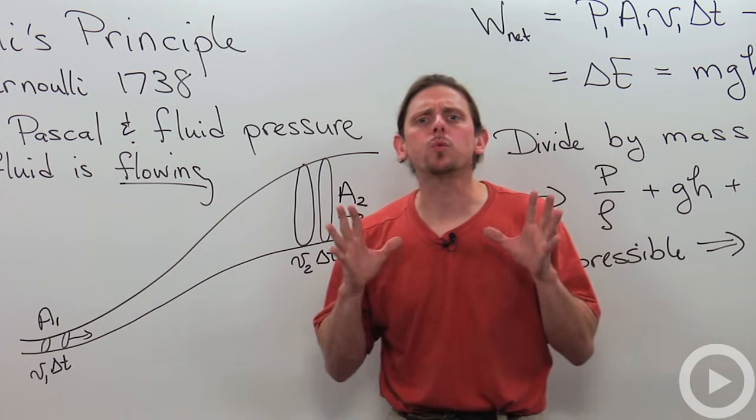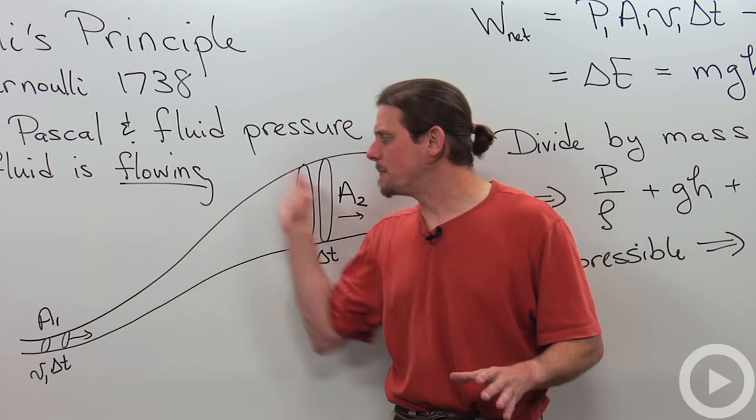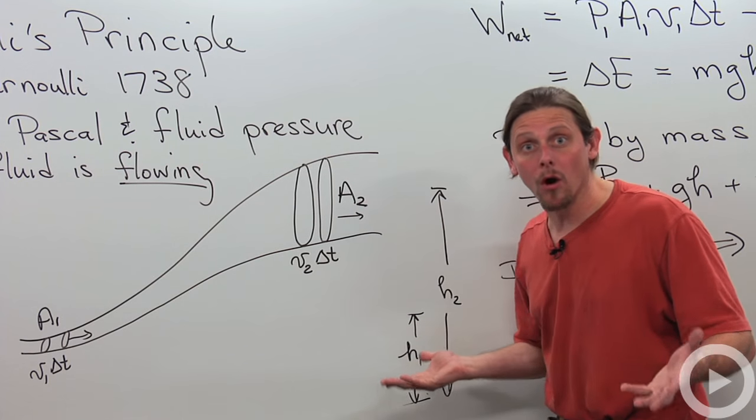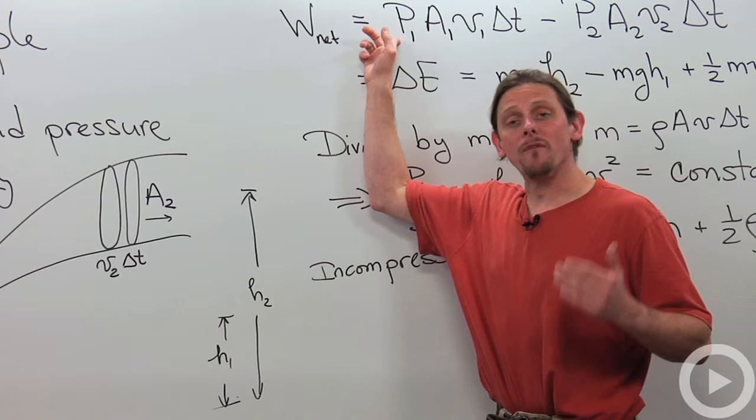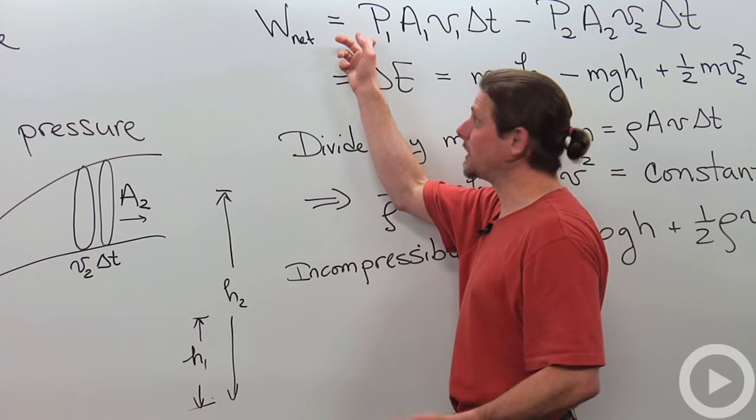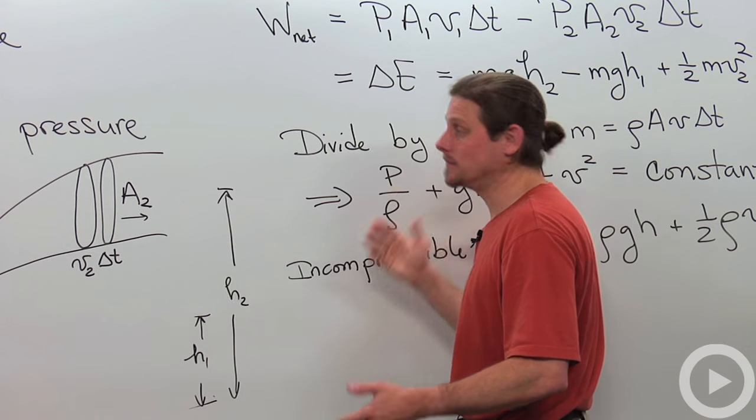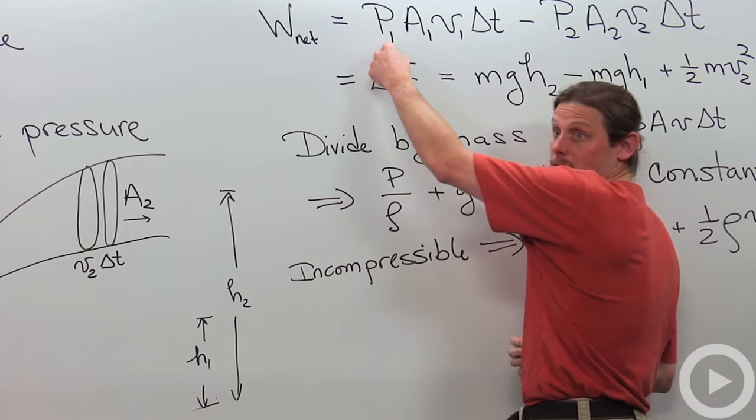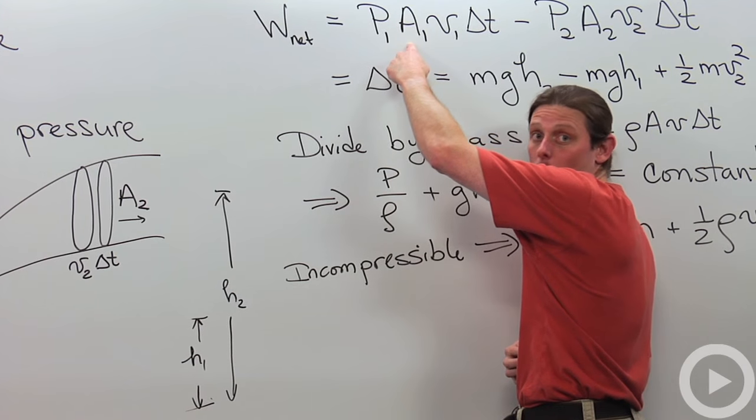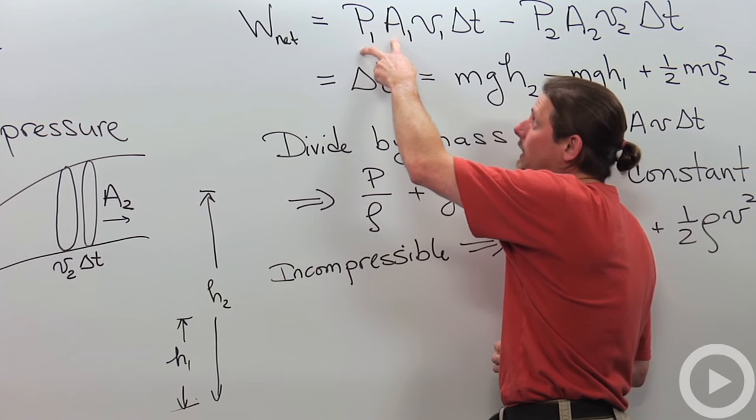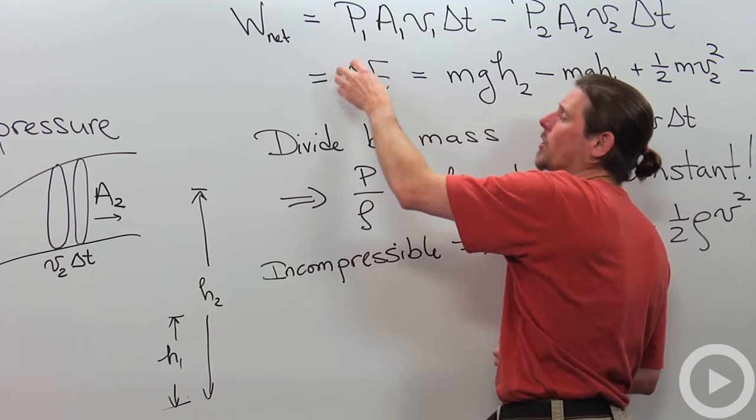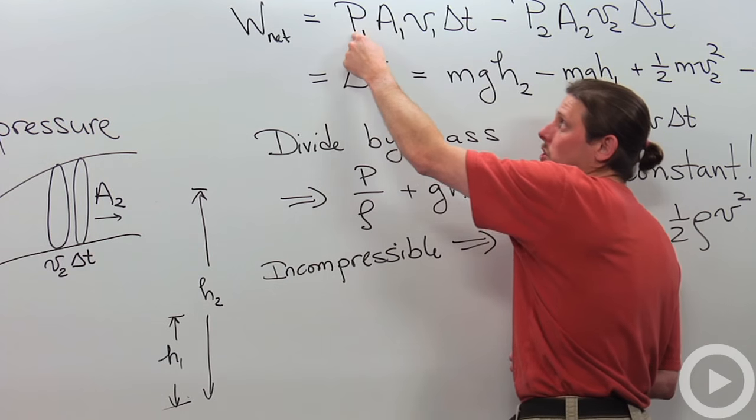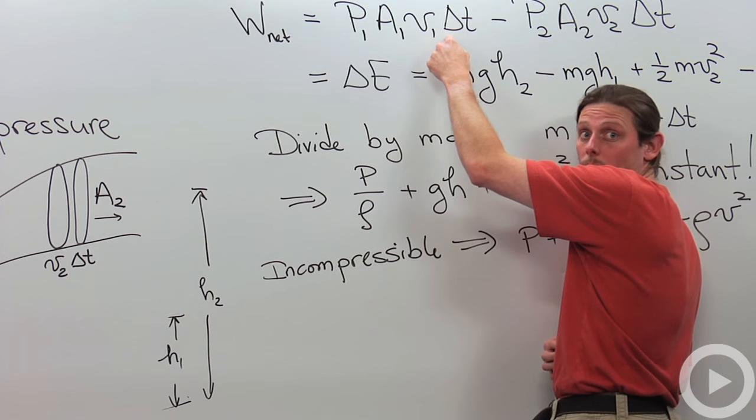How much work was done on this mass as this piece of fluid moved? The net work equals the force on the left, pushing to the right in the direction the fluid's moving. That force is the pressure times the area, because that's what force always is. But work isn't just force; work equals force times displacement. So the force is pressure times area times how far it was displaced.